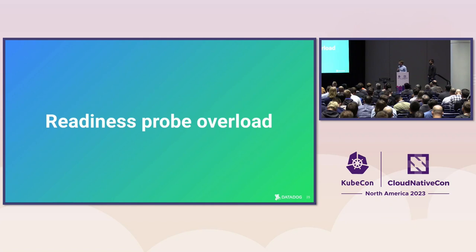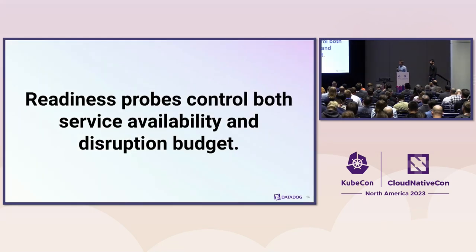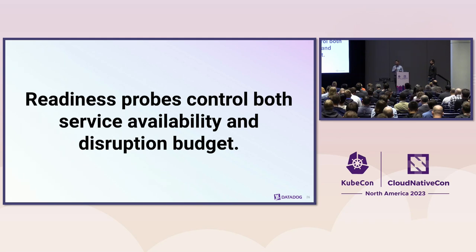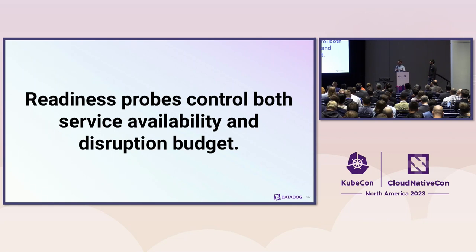The readiness probe is not expressive enough for disruption budgets. Its primary use is to tell when pods are ready to accept traffic — when a pod is ready, its IP is registered as an endpoint of a service. They're reused to express disruption budgets in terms of available pods. To replace nodes, we need non-zero budgets in general, but there are circumstances when disruptions should be delayed.